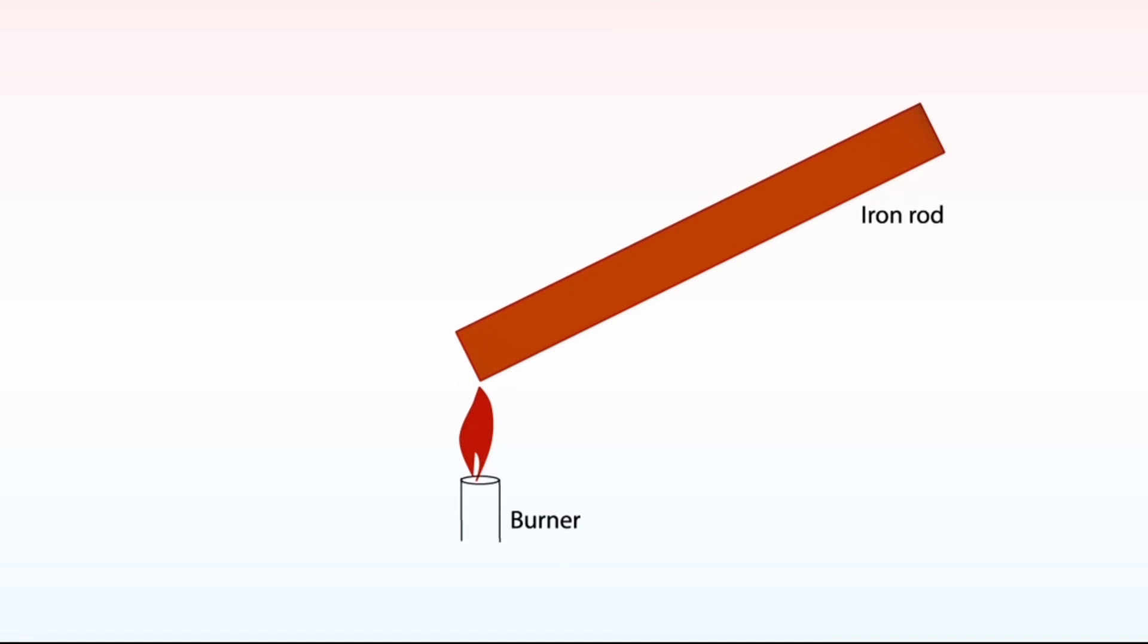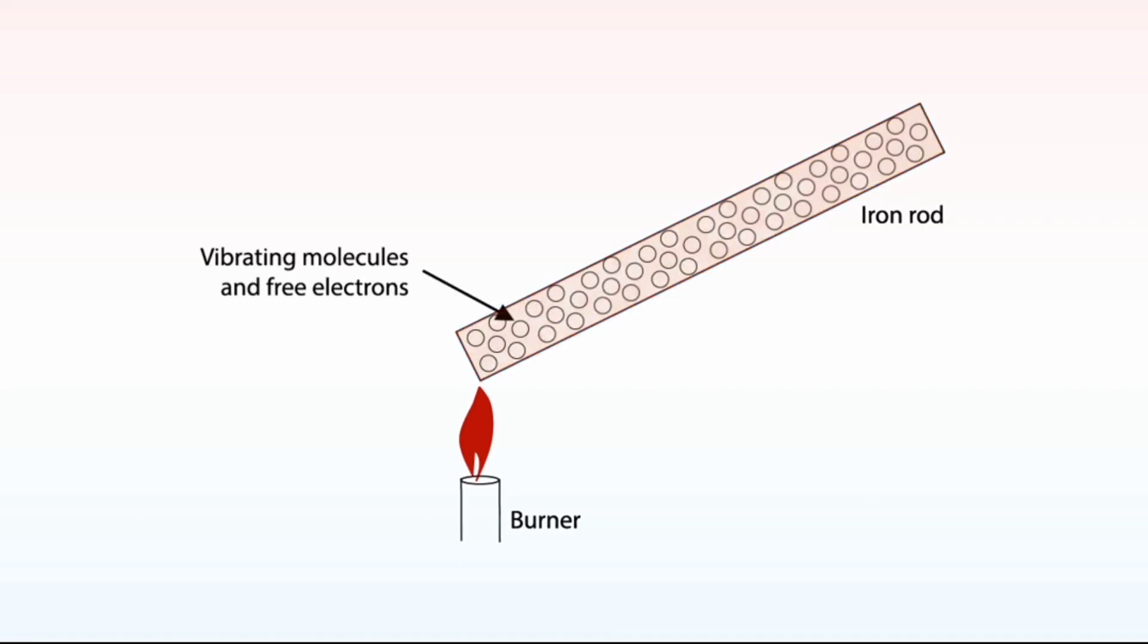The explanation is that conduction by the iron rod can be explained by collision between atoms or molecules and the action of loosely bound electrons. When the molecules near the source of heat take some heat, their internal energy increases. This increases their kinetic energy and as a result, they vibrate more violently.